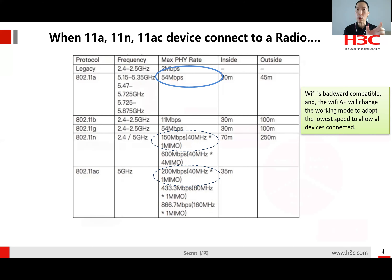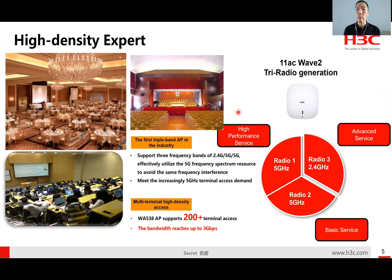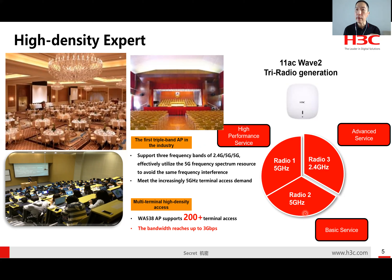A tri-radio access point normally comes with one 2.4GHz radio and two 5GHz radios. Under 5GHz, if you have 11a, 11n, or even 11ac devices connecting together, the lower-speed device affects the high-speed user experience. If we can dedicate one of the 5GHz radios to high-performance service — guaranteeing all 11ac Wave 2 devices connect at high speed — and let the other 5GHz radio serve the rest of the users, we can separate low-performance users from high-performance users.